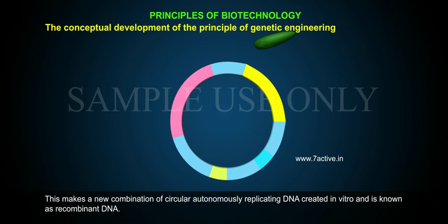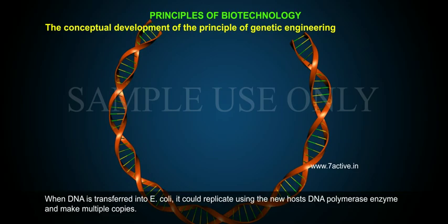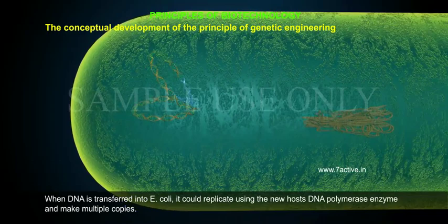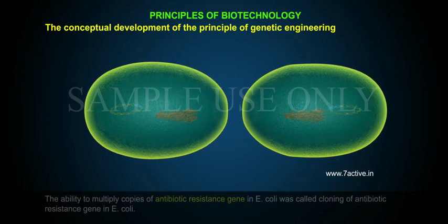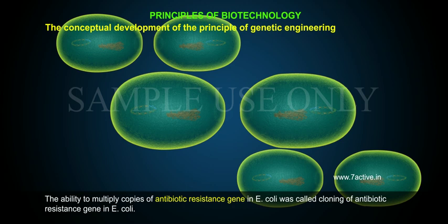This makes a new combination of circular, autonomously replicating DNA created in vitro, known as recombinant DNA. When this DNA is transferred into E. coli, it could replicate using the new host's DNA polymerase enzyme and make multiple copies. The ability to multiply copies of the antibiotic resistance gene in E. coli was called cloning of the antibiotic resistance gene in E. coli.